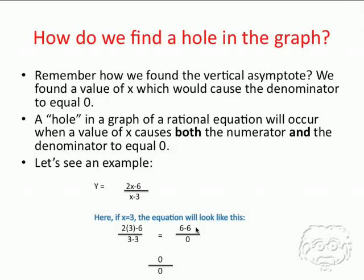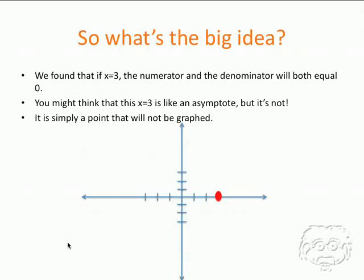Which we've worked out to be 6 minus 6 over 0. 6 minus 6 is 0 and we've ended up with 0 over 0. So both the numerator and the denominator now equal 0 when x equals 3.